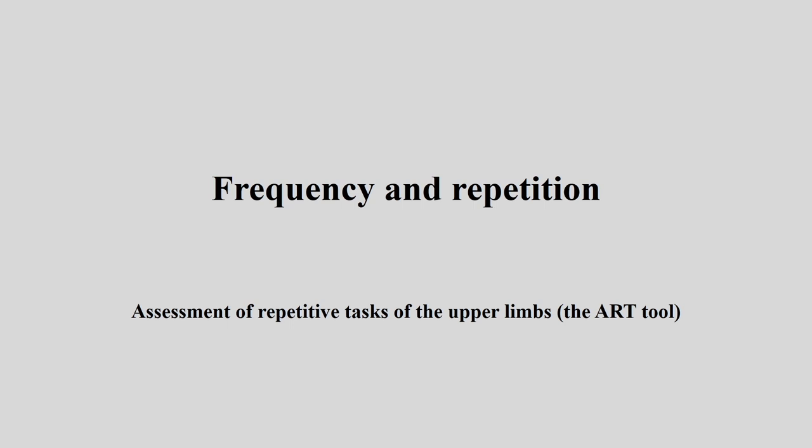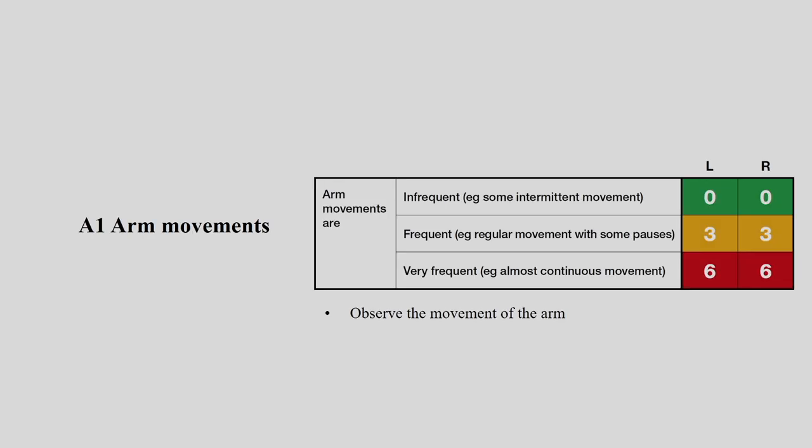Under Stage A, we are talking about frequency and repetition of the upper limb. The first factor is arm movement, referred to as A1. The coding system — A1, B1, C1 — must be used exactly as described in the tool, because the flowchart and data collection chart follow the same nomenclature. You cannot change it; you must use the exact same nomenclature that is present in the tool.